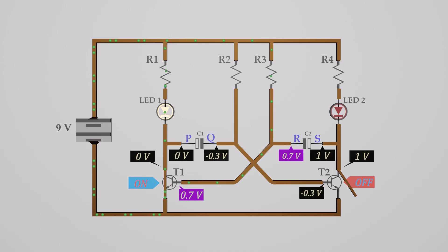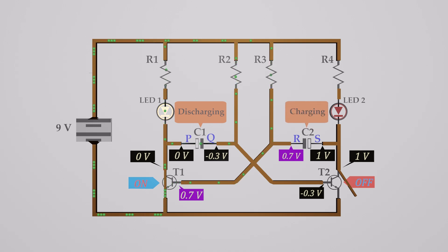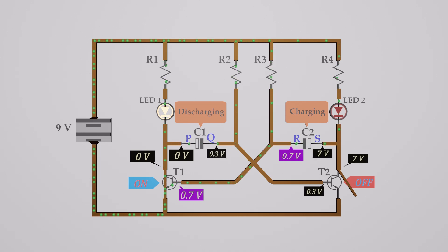Let's pay attention to capacitor C1. Since transistor T1 is in its on state, the P side connected to the collector pin is at 0 volts, and this voltage remains until T1 becomes off. Side Q is charging through resistor R2 — in other words, capacitor C1 is discharging. Meanwhile, looking at capacitor C2, the R side connected to the base pin is at 0.7 volts, remaining until T1 becomes off. Side S is charging through resistor R4. Combining all these: the voltage of the Q side increases gradually from minus 0.3 volts to 0.7 volts, and the S side's voltage gradually increases from 1 volt to the supply voltage of 9 volts.